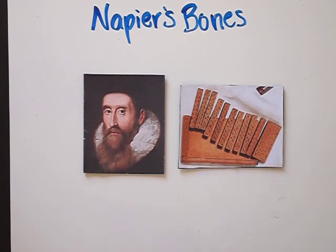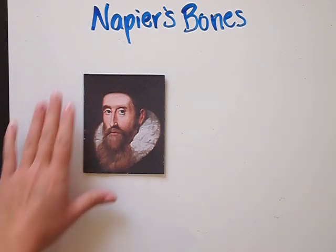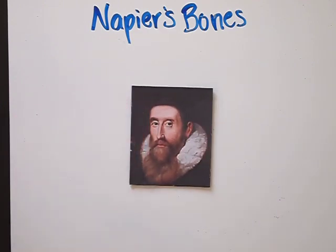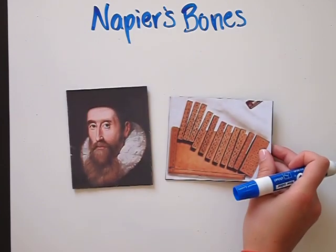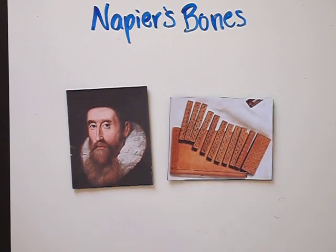The bones were used for making multiplying large numbers quicker and less mathematically challenging. John Napier was a Scottish mathematician and theological writer during the late 15th and early 16th centuries. One of his biggest contributions was creating the concept of logarithms. His bones, otherwise known as rods, also helped make calculations easier — they were created so that the person calculating only needed to know how to add.